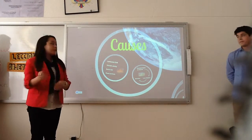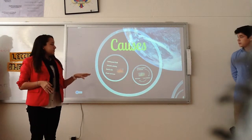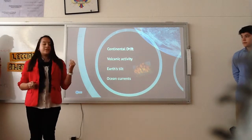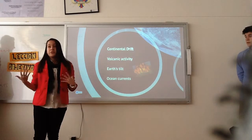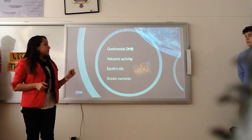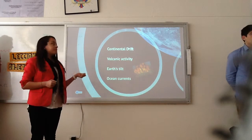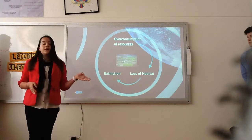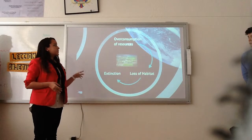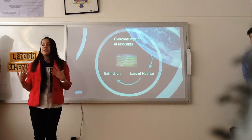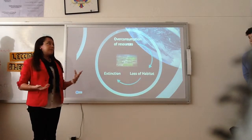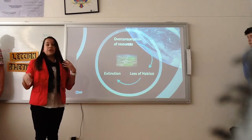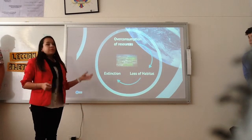Now that you know why ecosystem loss is a problem, we want to show some causes. We've separated these into two categories: natural causes, which we have no control over, and human causes. The natural causes — I'll skim over these because they're not our main concern right now — include continental drift, volcanic activity, Earth's tilt, ocean currents, and methane secretion. The human causes are represented in a cycle: overconsumption of resources leads to loss of habitat, which leads to extinction. This happens because our planet does not have enough resources for 7 billion people, let alone all the species that inhabit it. We take more than what we actually need, leaving other species without their habitat, which makes them more prone to extinction.